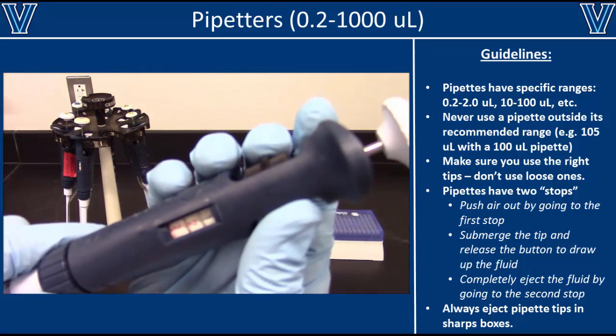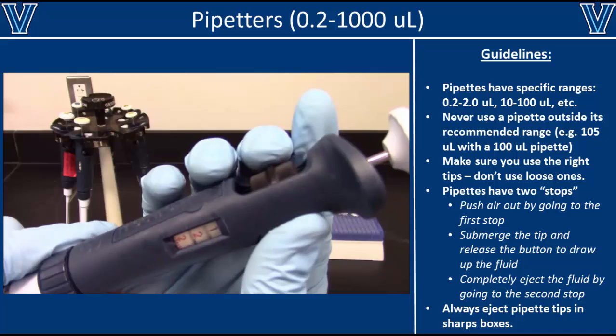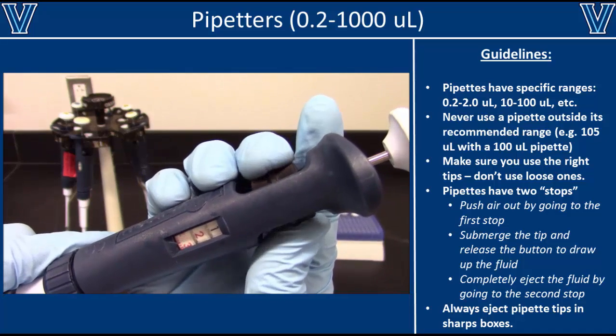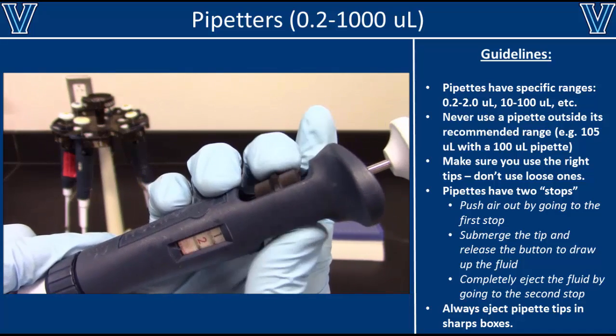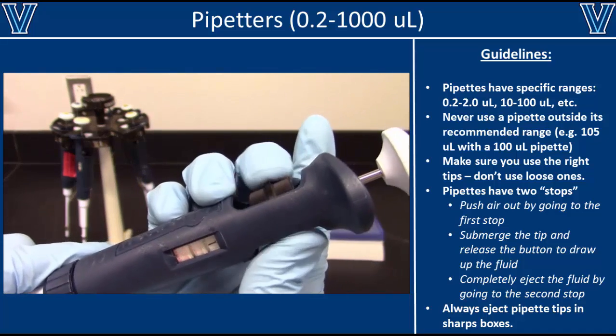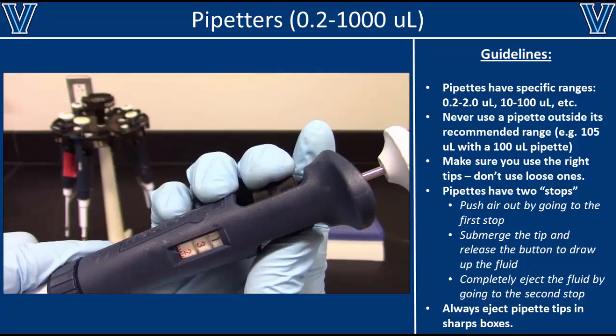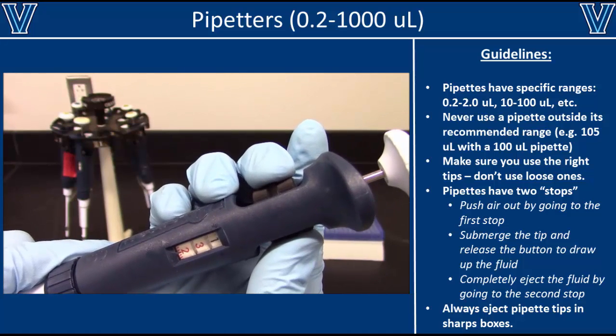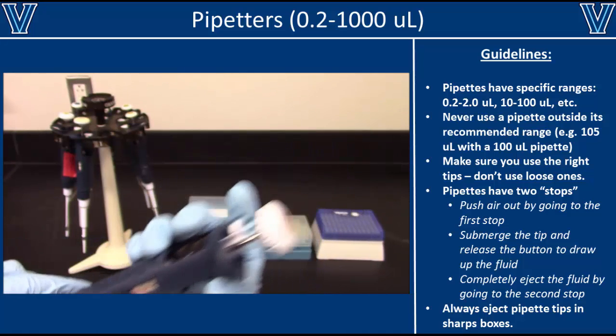On a P2 pipette, two of the digits are shown in red and one is in black for microliters. In this example, the pipette is currently set to 1.32 microliters.